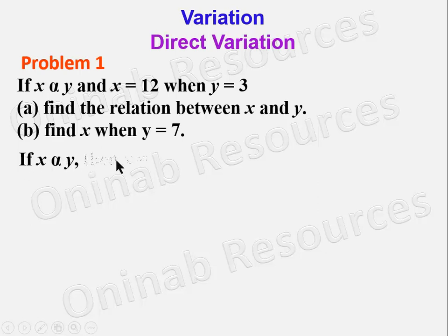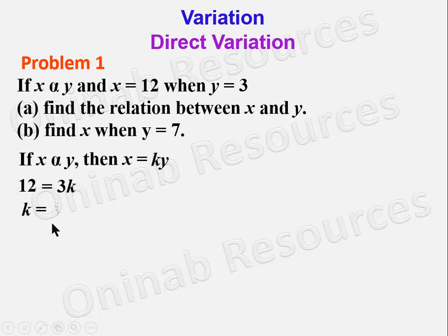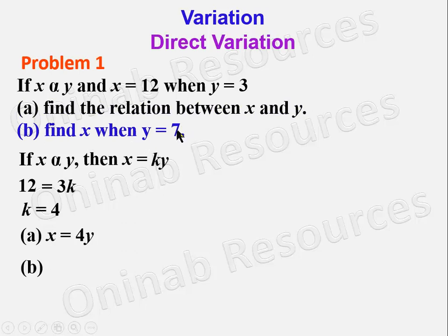In our solution, if X varies directly as Y then X is KY. When X is 12 and Y is equal to 3, so 12 is equal to 3K — that will enable us find the value of K. Dividing both sides by 3, K is equal to 4. We then substitute K to get our relation between X and Y: X is equal to 4Y. For part (b), find X when Y is 7: substitute Y to get X equal to 4 times 7, which gives 28.